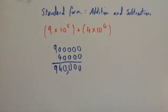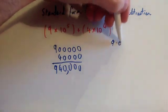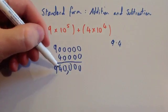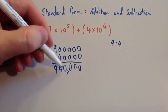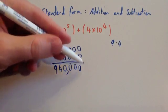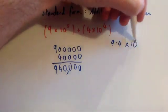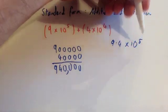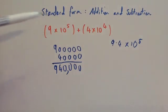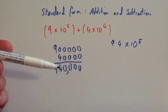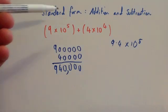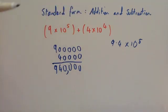If we wanted to write that in standard form, it would be 9.4 times 10 to the power of 5. Whenever you've got numbers in standard form, sometimes it's easier just to write them out in full and then add or subtract them. If the powers are exactly the same, you can just add the numbers at the front, but make sure your answer is in standard form so you may need to change it.